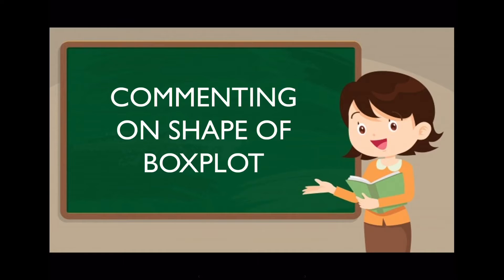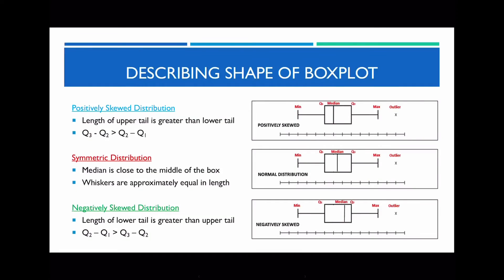Now let's look at how we comment on the shape of a box plot. We always compare the shape, center, spread and outliers. So before we do that, I want to explain what I mean by the shape of a box plot. There are three main types of shapes associated with a box plot: positively skewed, symmetric, or negatively skewed. There are some ways that will help us determine the shape of a box plot, and there are actually different definitions if you look at different sources.